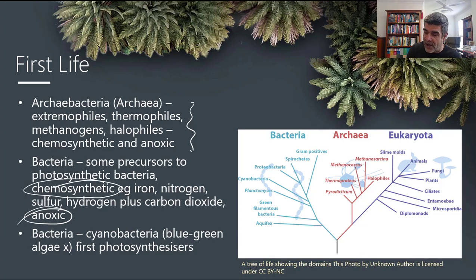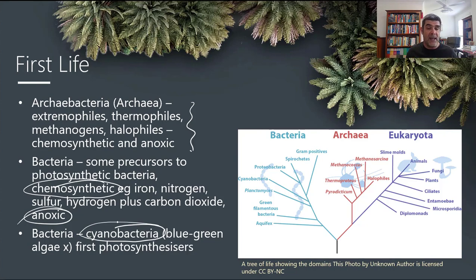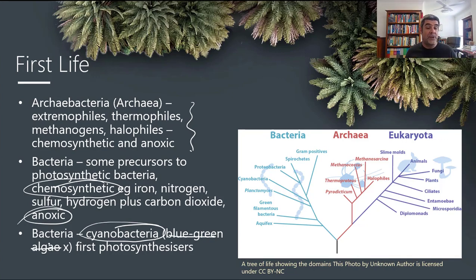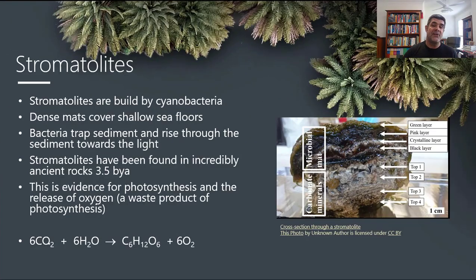The group we have to focus on is the cyanobacteria. You may find reference in older books to blue-green algae — don't use that term. Algae are eukaryotic, and cyanobacteria are not, so it's a misnomer to associate them with algae. We'll use the term cyanobacteria. Cyanobacteria are the ones associated with stromatolites, and we believe they were the first photosynthesizers — the first organisms actually capable of using light as an energy source for chemical reactions.